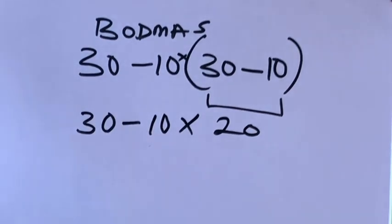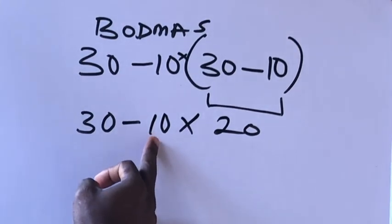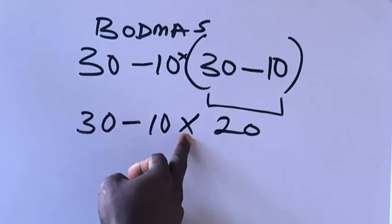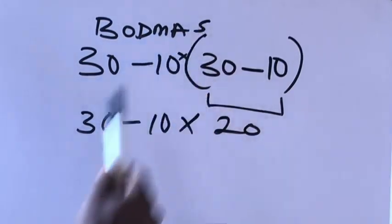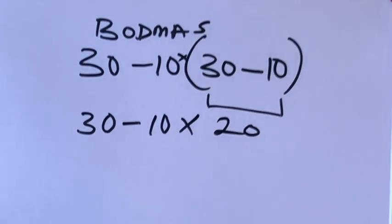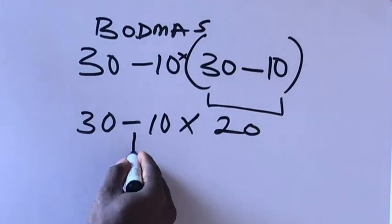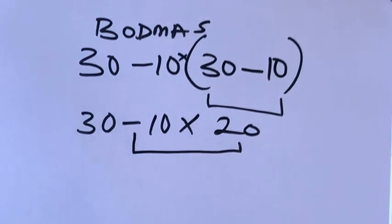Now you know that multiplication comes before subtraction, so we have to multiply negative 10 times 20.